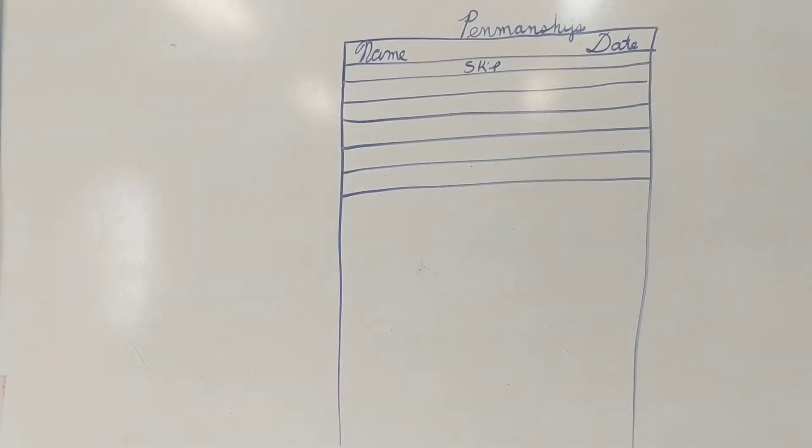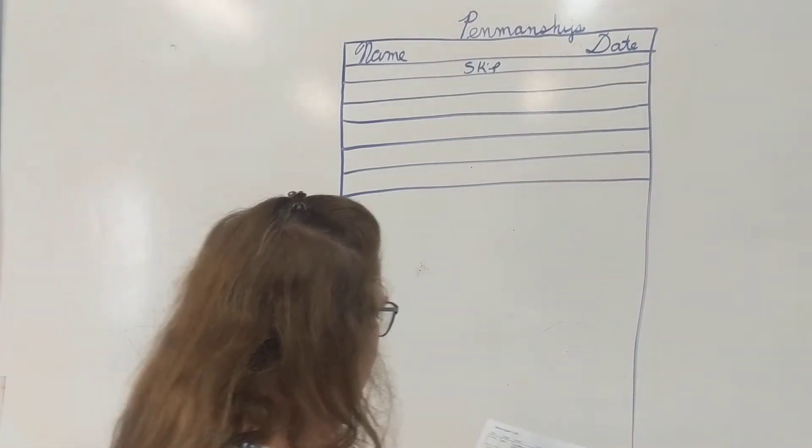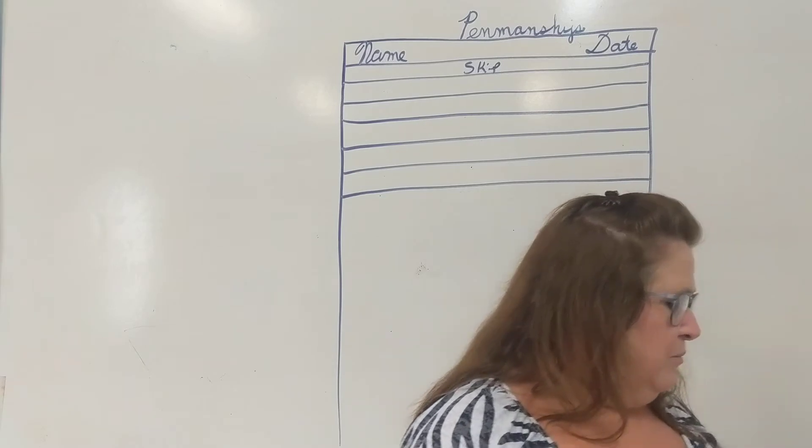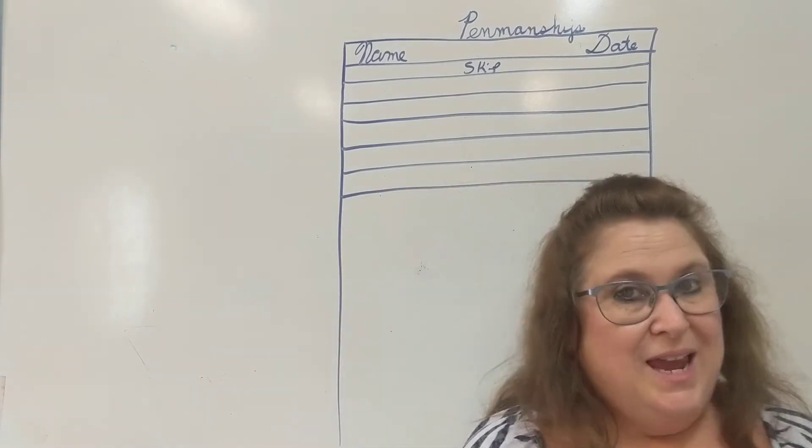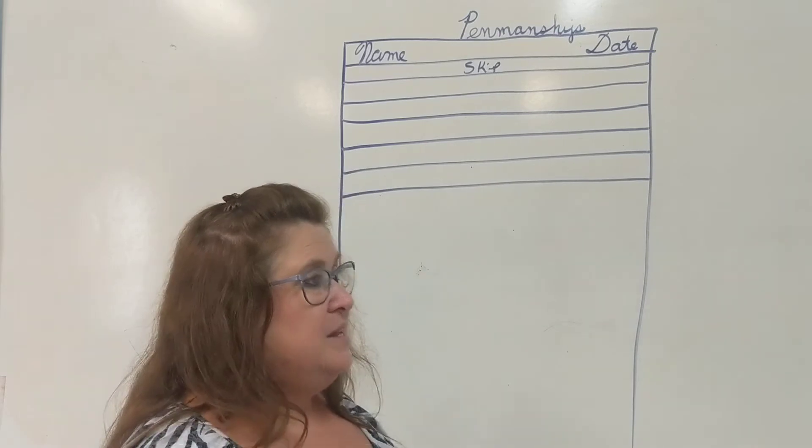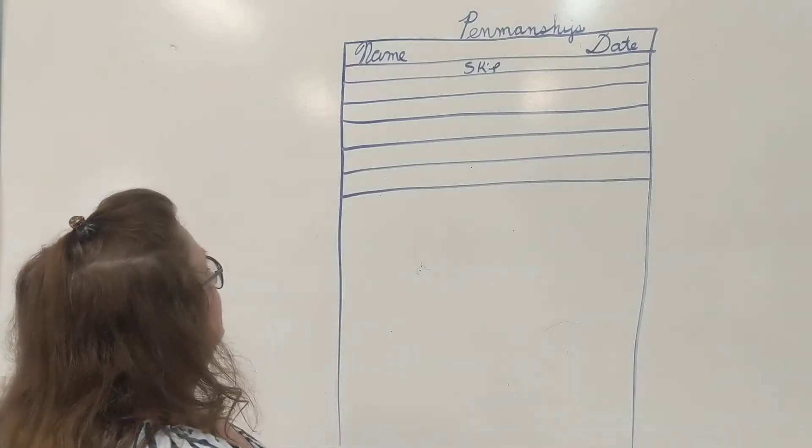So this is penmanship for Monday, August 17th. Today we are going to be writing capital J's, K's, and L's, and little case J's, K's, and L's. So here we go.